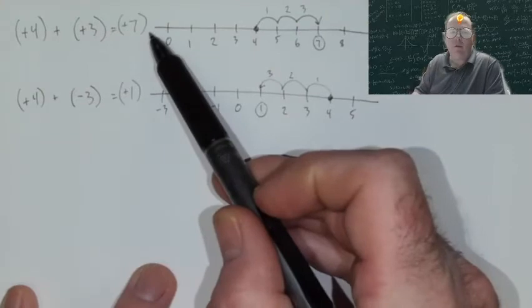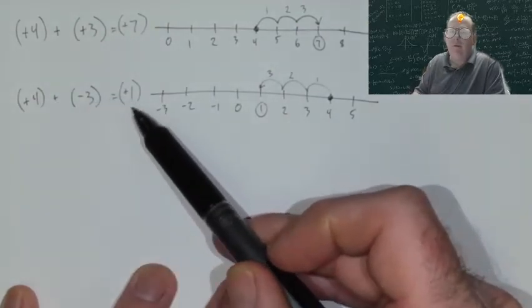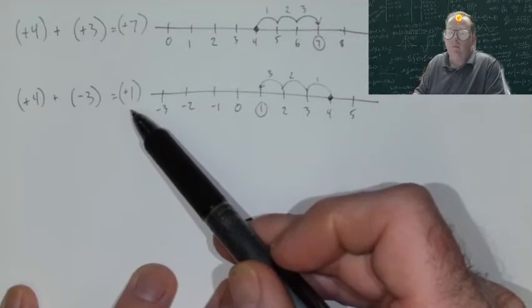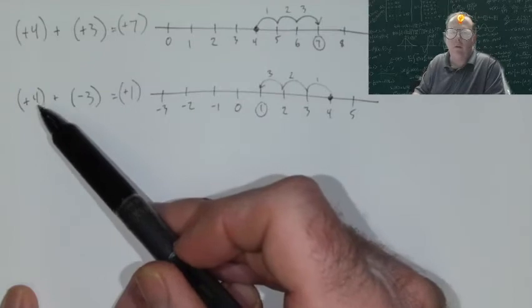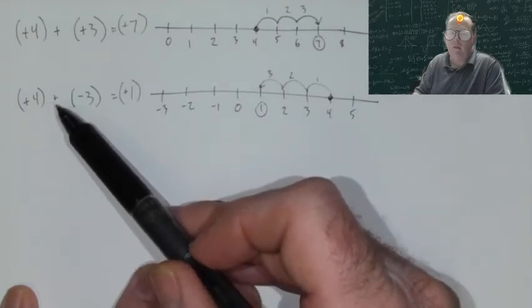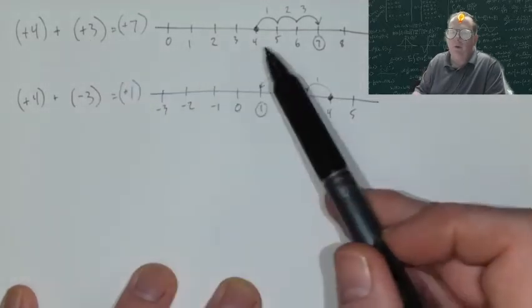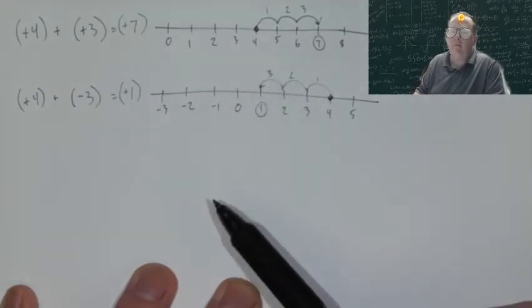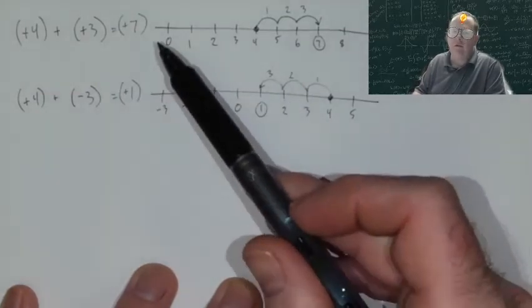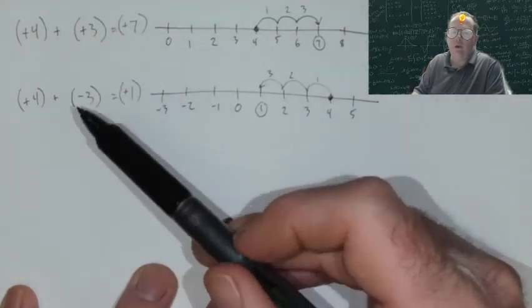So 4 plus 3 is 7. 4 plus negative 3 is equal to plus 1. Exact same process followed. Start at your first number. We're adding, which is going to be the most comfortable situation for most of you. Positive, then we move to the right. Negative, we move to the left. And the number we land on is our answer. We have two different answers for two different equations.